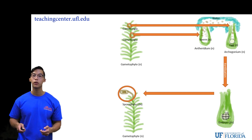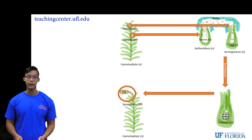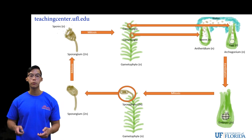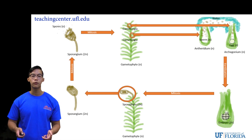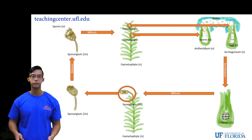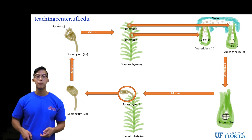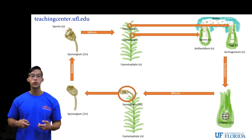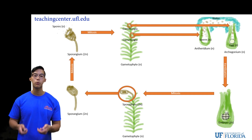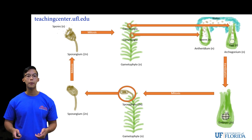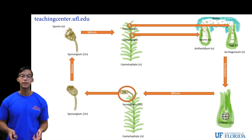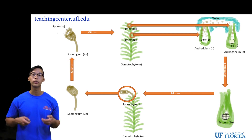Finally, the sporangium has a ploidy of 2n and produces spores with a ploidy of n. Since meiosis cuts the ploidy in half, we can conclude that the 2n sporangium undergoes meiosis to produce the n spore. The haploid spore then germinates, or undergoes cell division by mitosis, into the gametophyte, and the cycle starts over again.